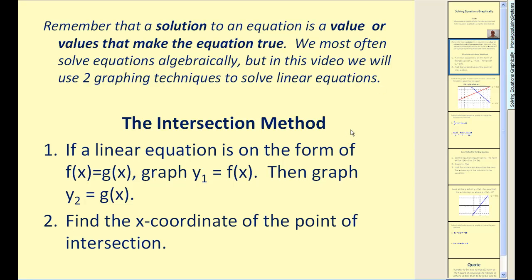The first method is called the intersection method. If a linear equation is in the form f(x) = g(x), first we'll graph y1 = f(x), then we'll graph y2 = g(x). Essentially, we'll graph the right side and the left side of the equation separately, and then find the x-coordinate of the point of intersection. That x-coordinate will be the solution.